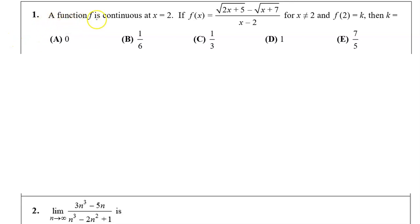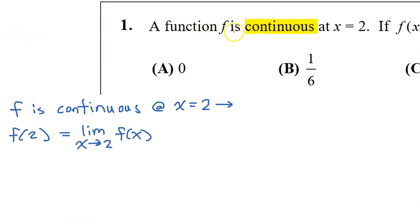Problem number 1. A function f is continuous at x equals 2. Focus on the word continuous. If f is continuous at x equals 2, that implies that the value of the function at 2 is equal to the limit of the function as x approaches 2. That's just the definition of continuity.